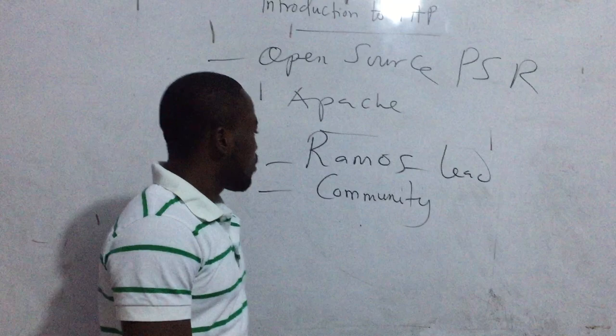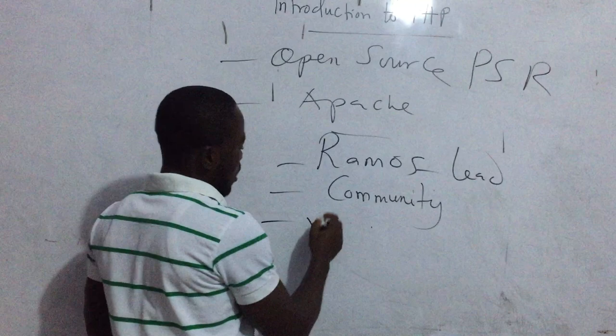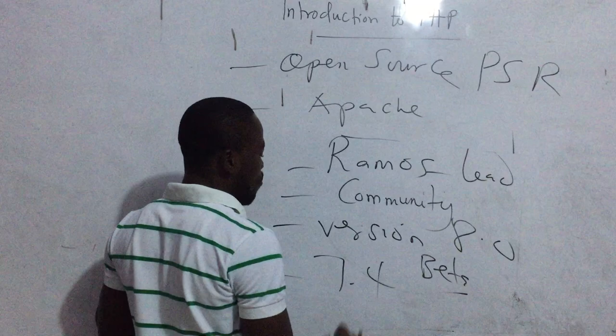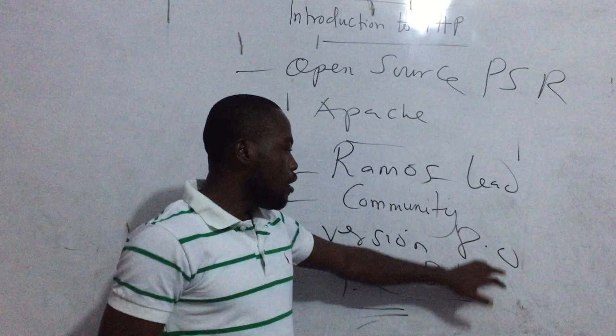When the lead and the community are done, they release a version. The current version, PHP 8.0, is in the beta or testing stage. If you want a stable version of PHP, go for PHP 7.4, which is supported by most web servers. PHP 8.0 is a beta release; PHP 7.4 is the stable master release.